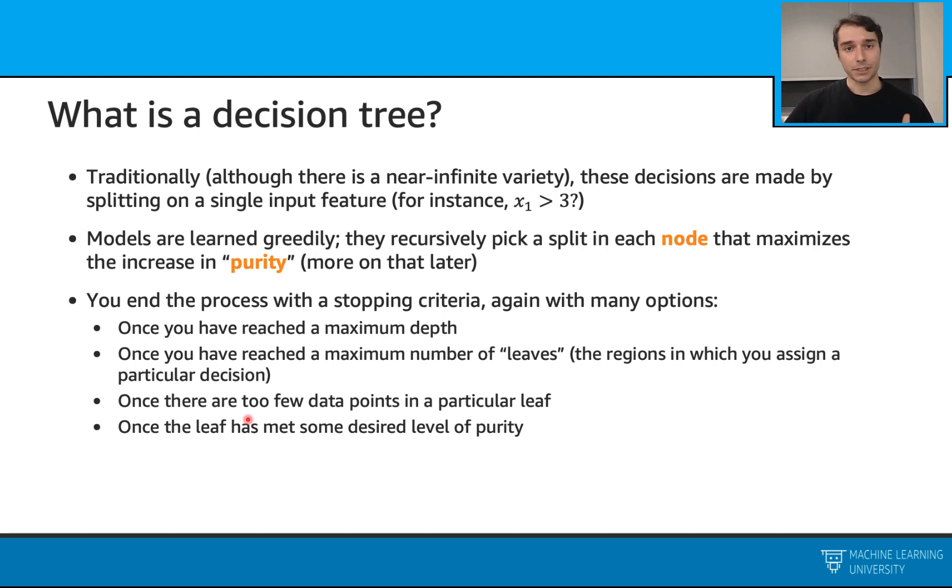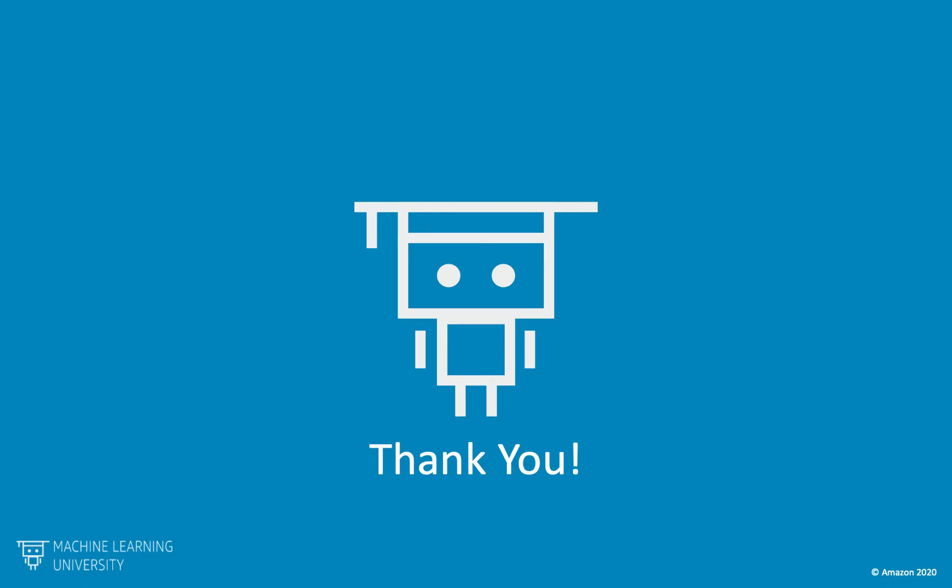Overall, we usually like to have some stop conditions on these trees. Because trees are usually well known for overfitting. So for example, you may see some things like we will stop when we reach a maximum depth. Or when we reach a maximum number of leaves. Or when we have too few data points in the particular leaf. Or when a certain leaf has met some desired level of purity. In the next section, we will talk about how to calculate these purities. And we will dive deeper into this purity-impurity idea. And we will see each other in the next section. Thank you.